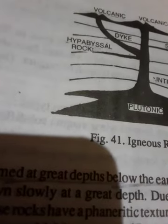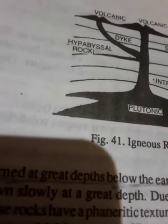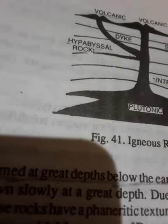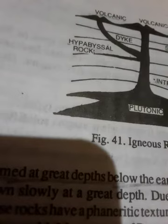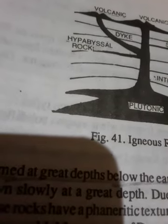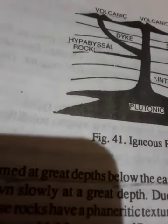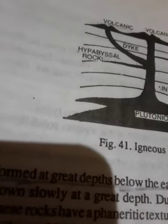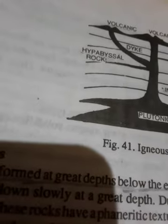Metamorphic rocks can be formed from igneous, sedimentary, or even from previously metamorphized rocks. The major types of metamorphic rocks are slate, schist, gneiss, quartzite, marble, amphibolite, metaconglomerate, and hornfels. And with this, I am ending my geography class.